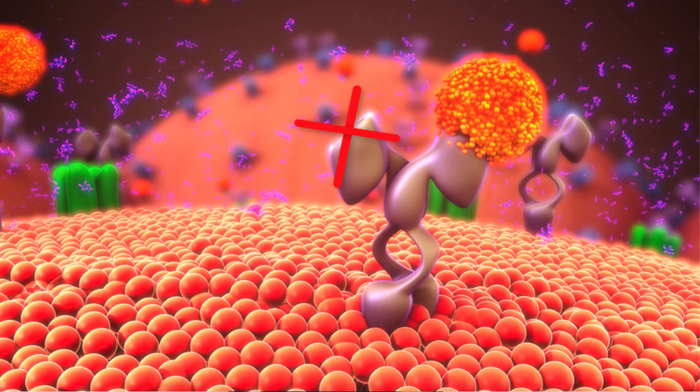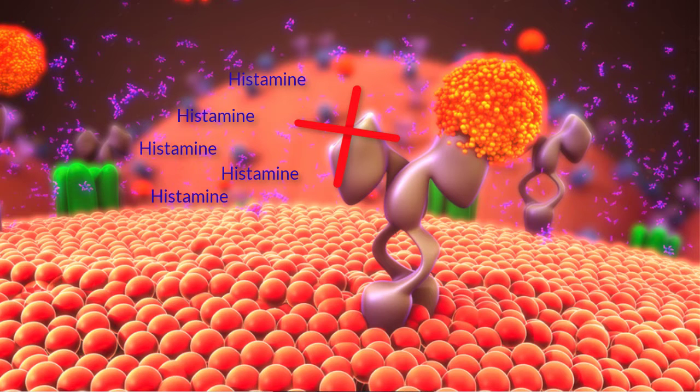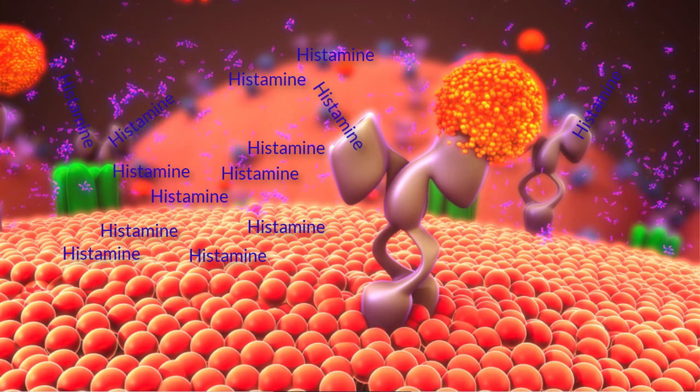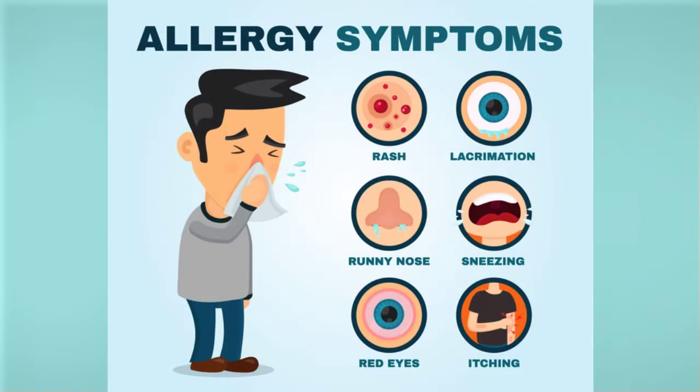So we still have the histamine in the body and that histamine will continue to increase even when we're on that antihistamine medication. So then what happens is that once you stop that antihistamine medication, since you still have a buildup of the histamine within the body, once you stop that medication, then the histamine can now go into those histamine receptors and cause a reaction in the body.